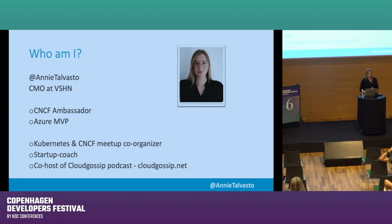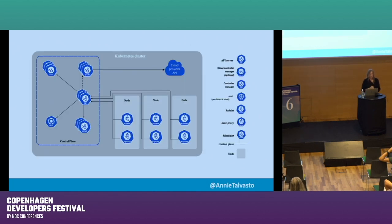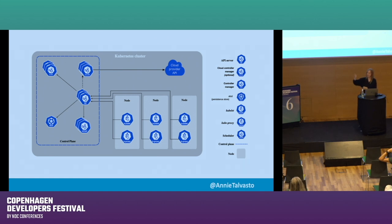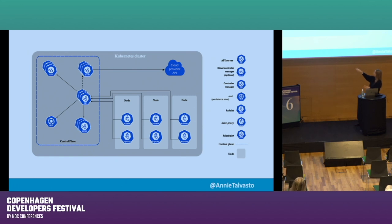Here is the Kubernetes cluster — how many have seen this before? Okay, some of you. This is the Kubernetes cluster, which is comprised of the control plane, the nodes, and the cloud provider API. The only thing you need to know is essentially that the control plane controls the nodes — it's the mastermind behind the operation.